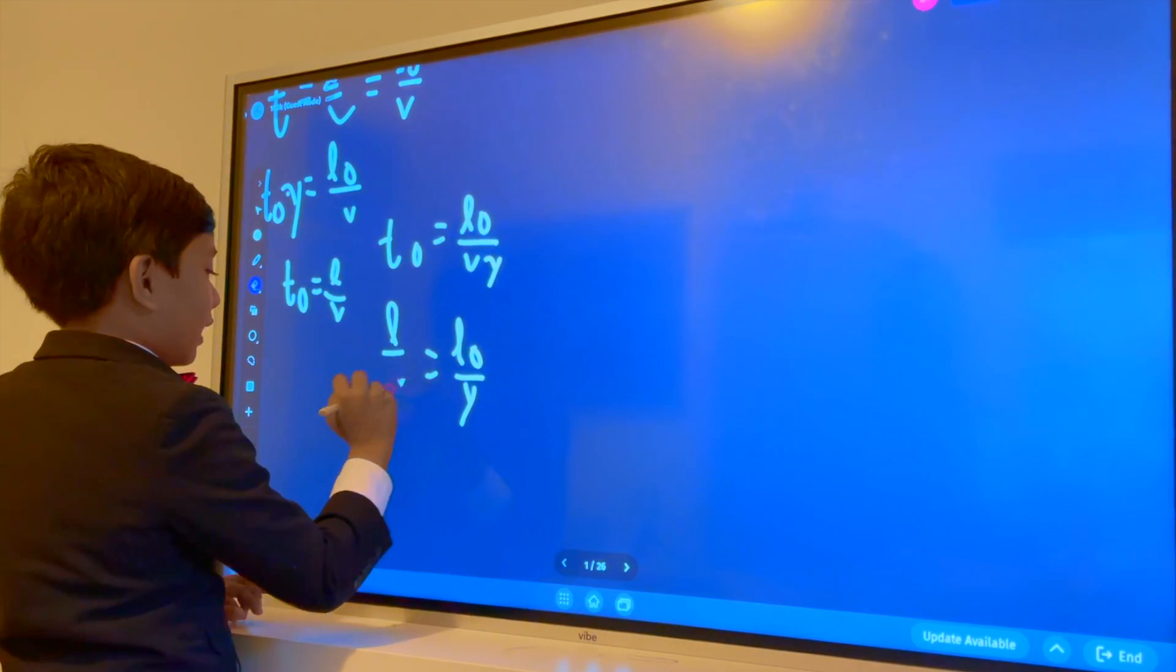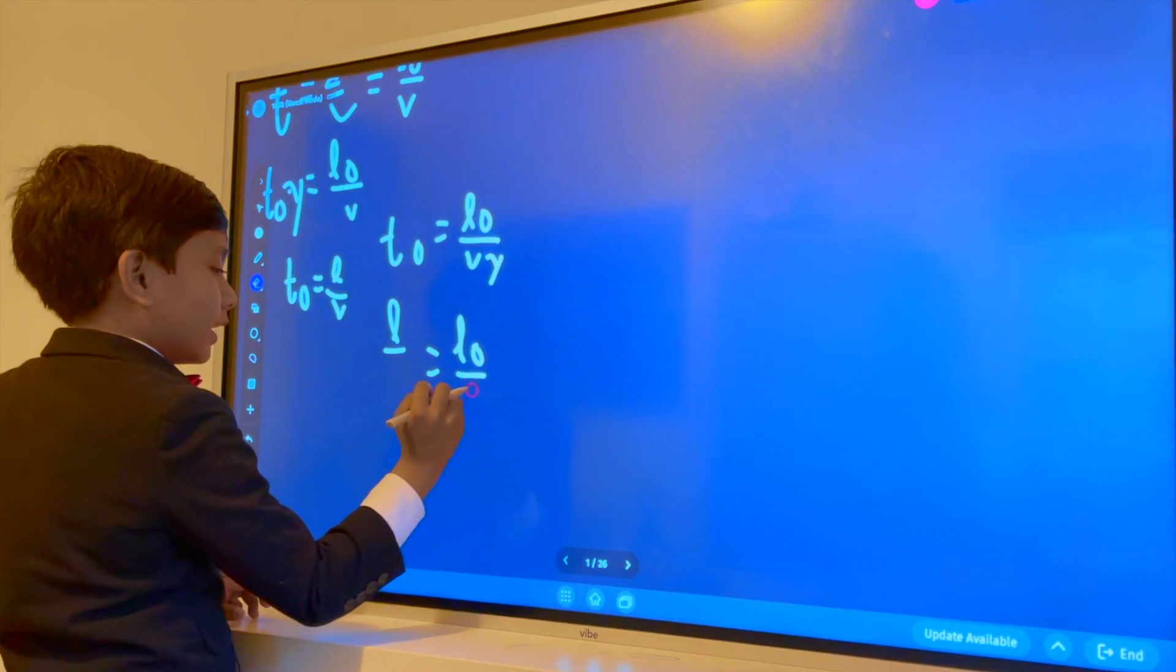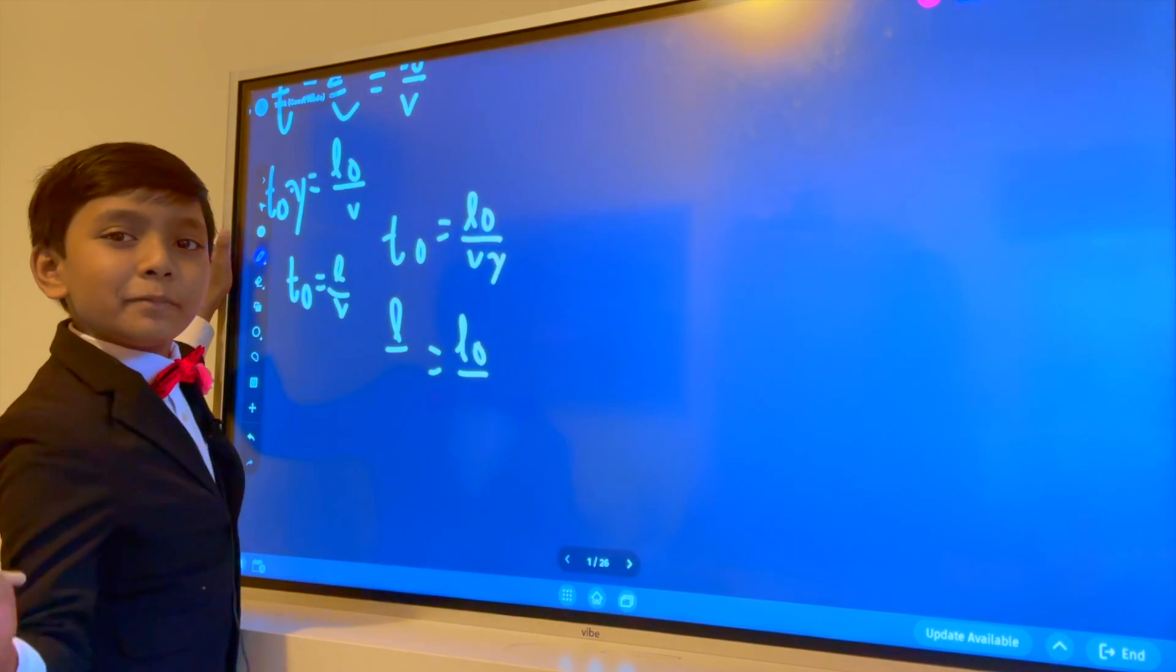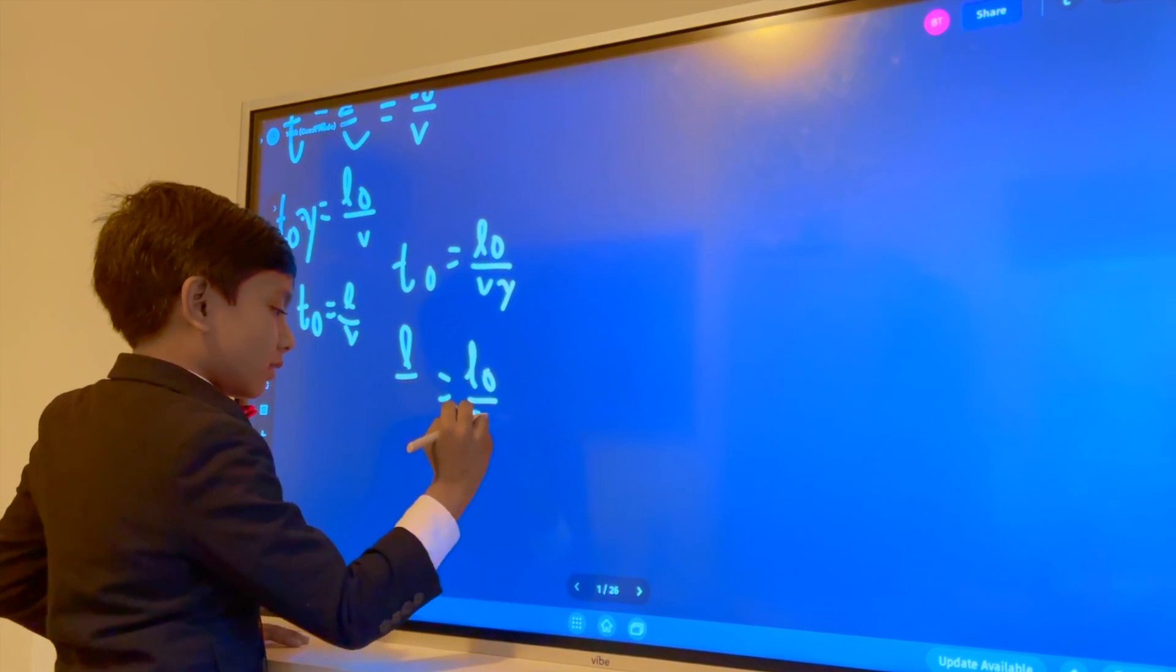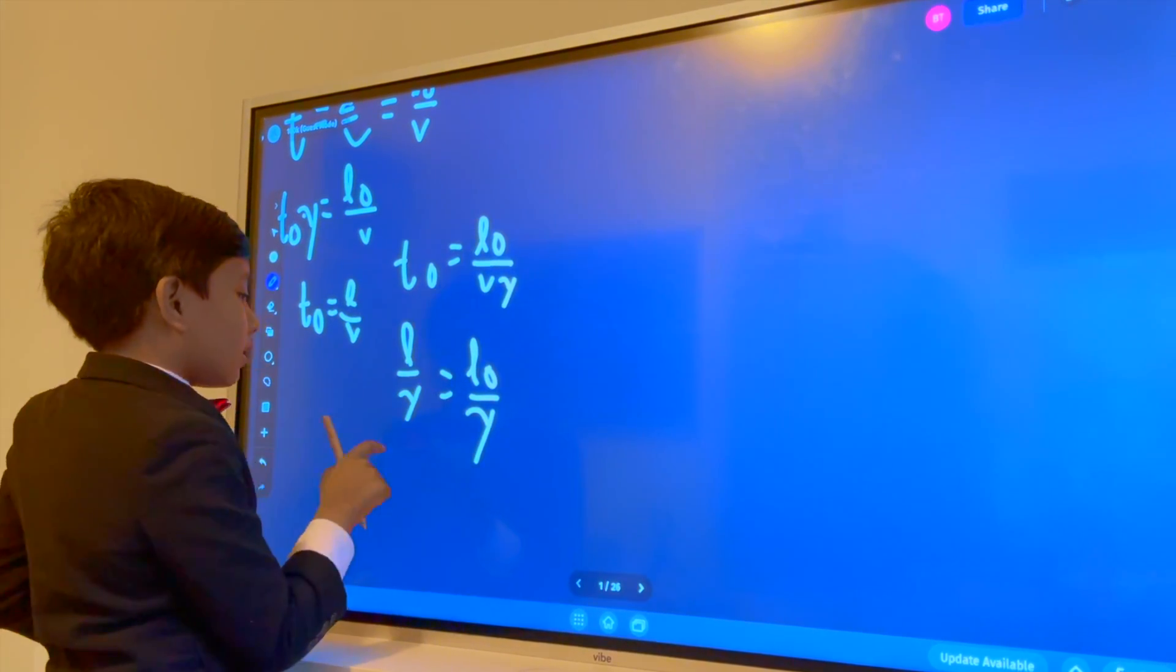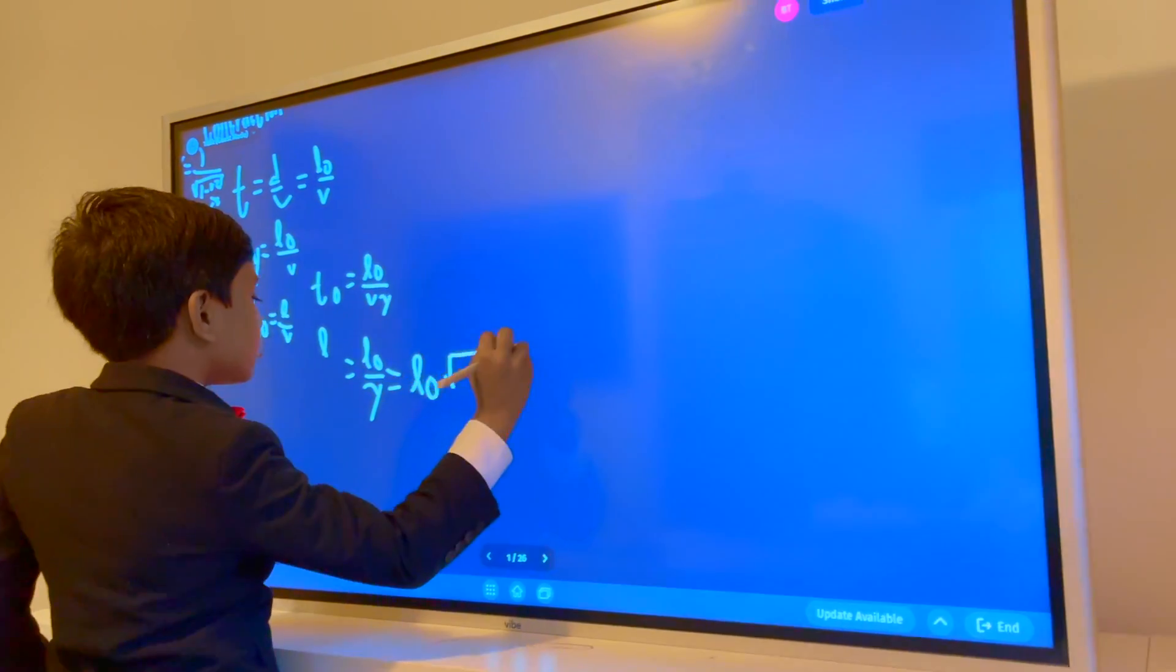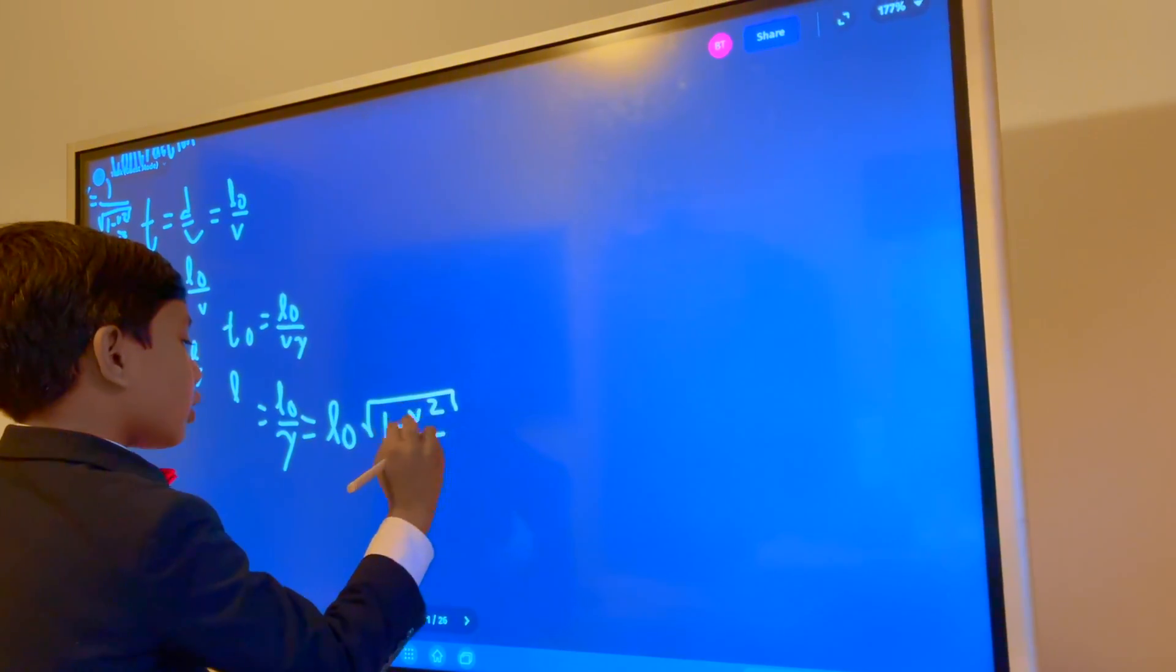I am so not used to writing gamma. Greek, Greek people, can you just make your letters a bit easier to write? Thank you. So, that's going to be L-naught square root of 1 minus V squared over C squared.